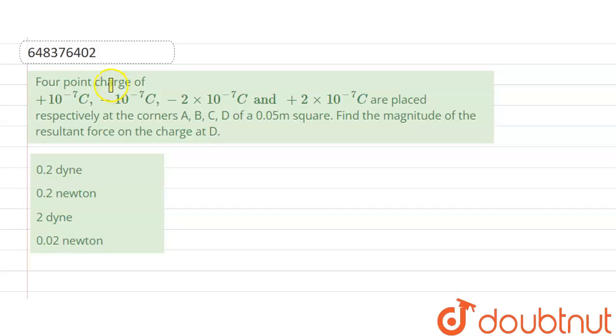Hello friends, our question is four point charges of +10^-7 coulomb, -10^-7 coulomb, -2×10^-7 coulomb and +2×10^-7 coulomb are placed